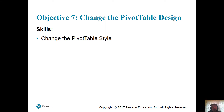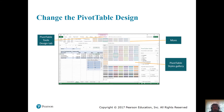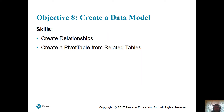Objective 7: Changing the styles of the pivot table — very similar to working with charts. On the left-hand side is the pivot table tools design tab, and on the right you have the more section and the pivot table styles gallery. You simply choose a style and it appears.